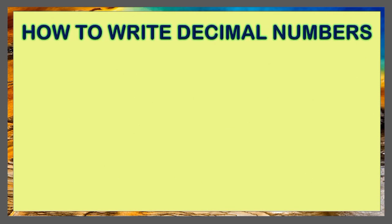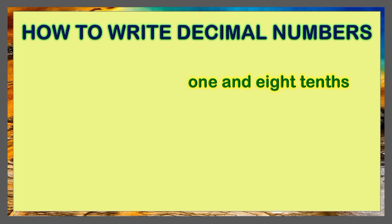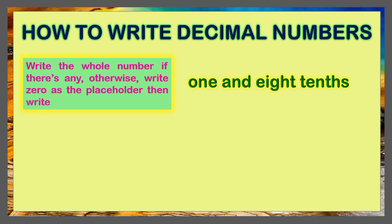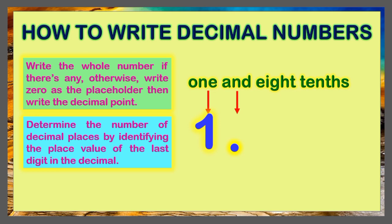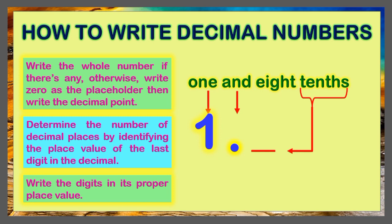Now let us learn how to write decimal numbers. We have here a decimal number written in number word: 1 and 8 tenths. The first step is to write the whole number if there's any; otherwise, write 0 as the placeholder, then write the decimal point. In this example, there is a whole number which is the digit 1, then we write the decimal point for the word AND. The second step is to determine the number of decimal places by identifying the place value of the last digit. The last digit is in the tenths place, so we only have 1 decimal place. The third step is to write the digits in their proper place value — we write 8 in the tenths place. Therefore, this is the number figure for 1 and 8 tenths.